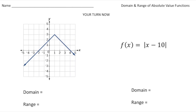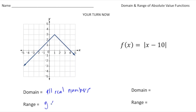Welcome back. Let's do these practice problems. Here we have an absolute value function that's going downward, but that doesn't really impact our domain at all. The domain is going to be all real numbers. For the range, the y values start at 3 and go down from there, so the range is going to be y is less than or equal to 3.